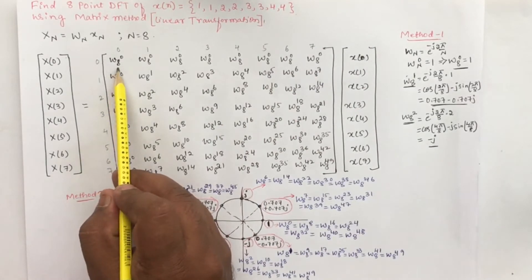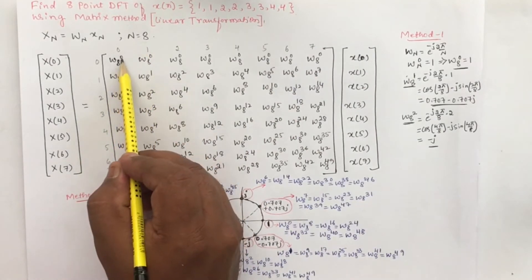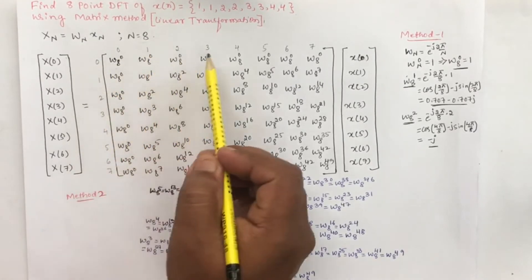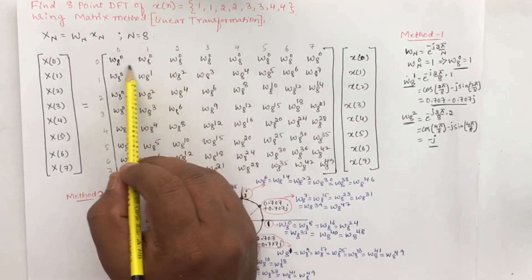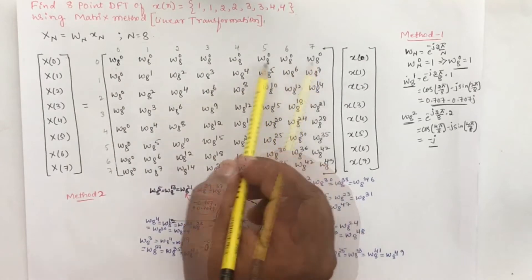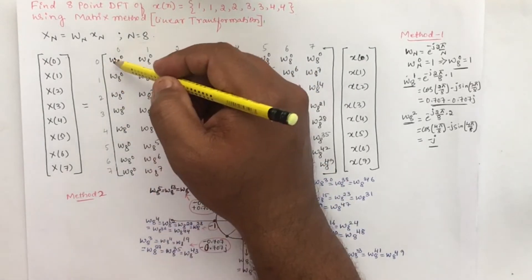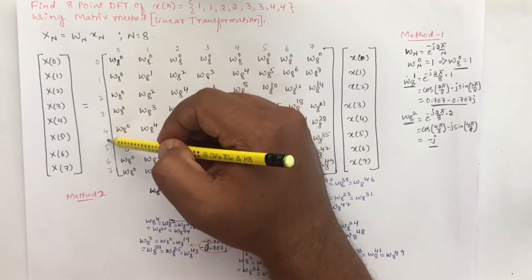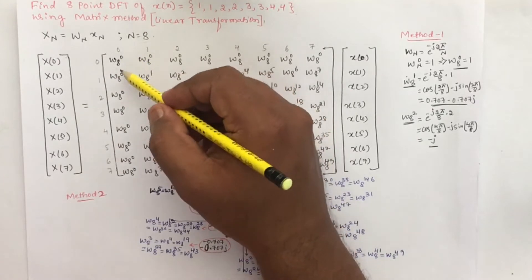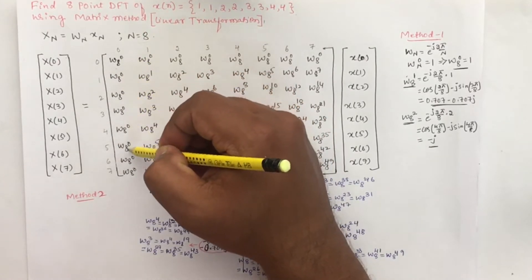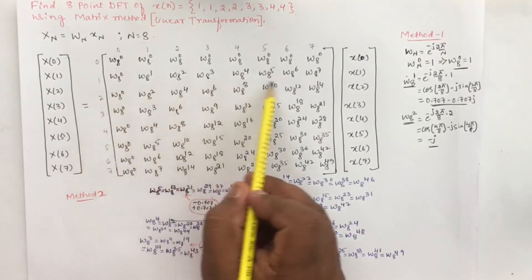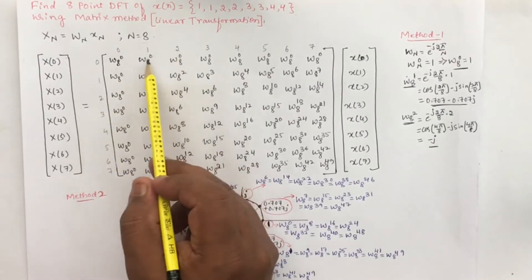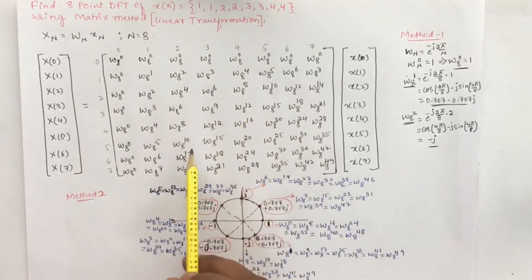So W8 is written since N equals 8. The first row has W8 to the power of 0 because 0 multiplied with any value is 0. Likewise, the first column also has W8 to the power of 0. To write the second row, we multiply 1 into 0, giving 0; 1 into 1, giving 1; and so on — multiplying the indices to get the powers of all the W terms.